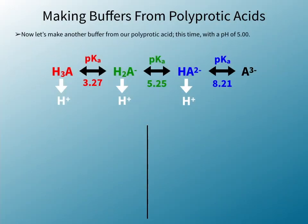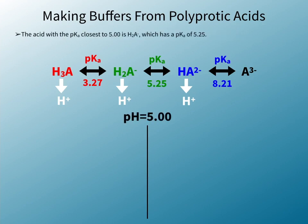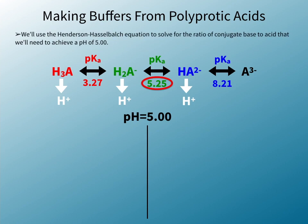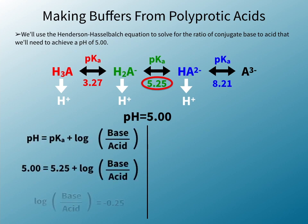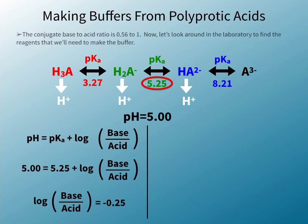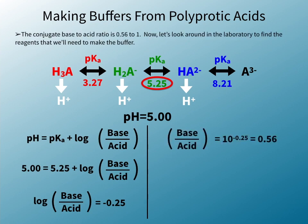Now let's make another buffer from our polyprotic acid, this time with a pH of 5.00. The acid with the pKa closest to 5.00 is H2A⁻, which has a pKa of 5.25. We'll use the Henderson-Hasselbalch equation to solve for the ratio of conjugate base to acid that we'll need to achieve a pH of 5.00. The conjugate base to acid ratio is 0.56 to 1.00.